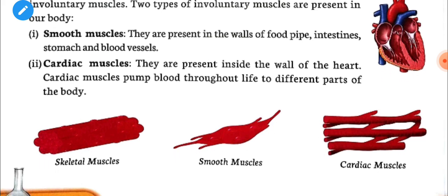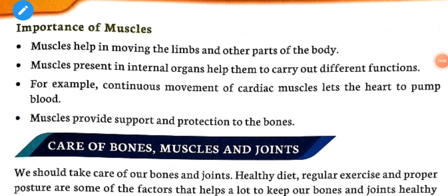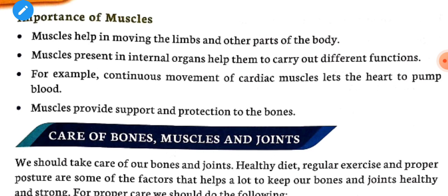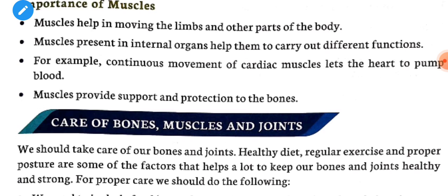Muscles help in moving the limbs and other parts of the body. Muscles present in internal organs help them carry out different functions — for example, the continuous movement of cardiac muscles lets the heart pump blood. Muscles also provide support and protection to the bones. Today's class is over and the rest of the chapter will be discussed in the next video.